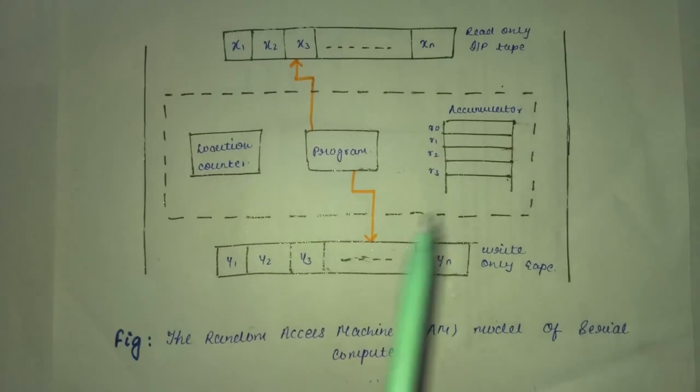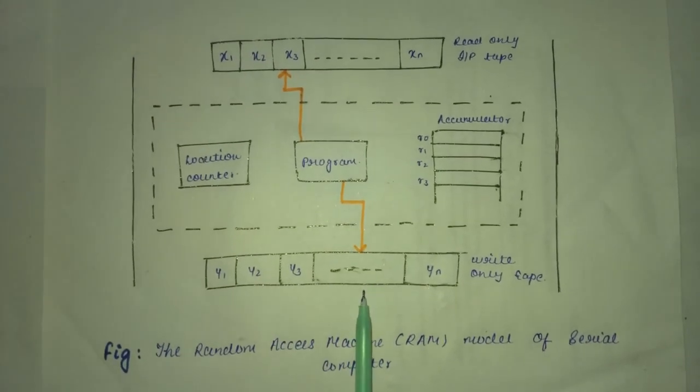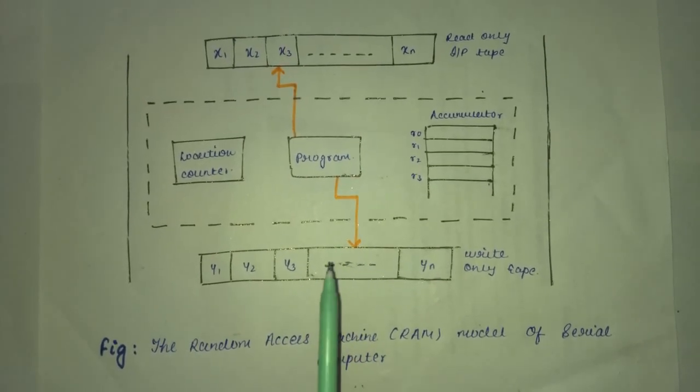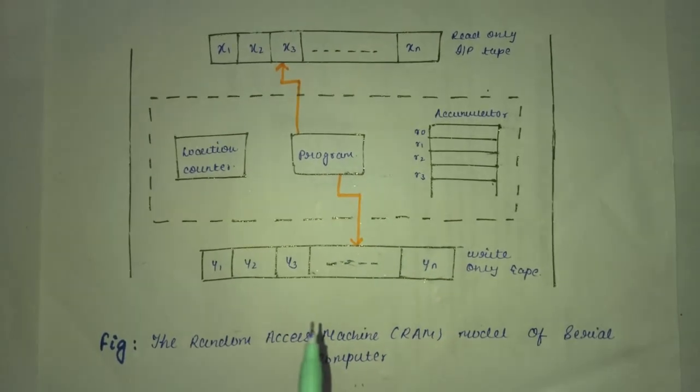The sequential model can be described by only a single diagram, as you are seeing over here. The sequential model or the random access machine is a model of one address computer.